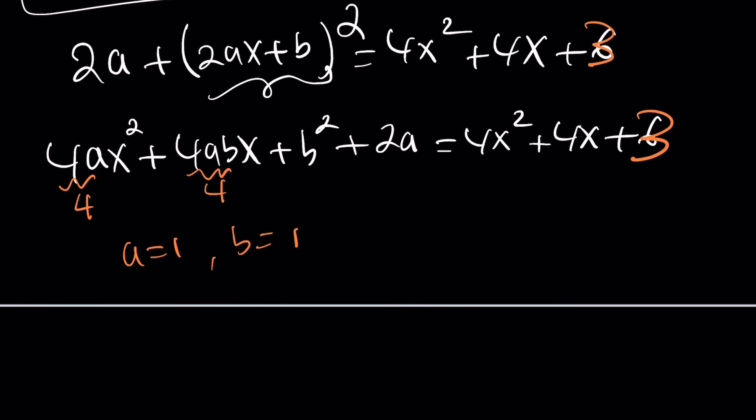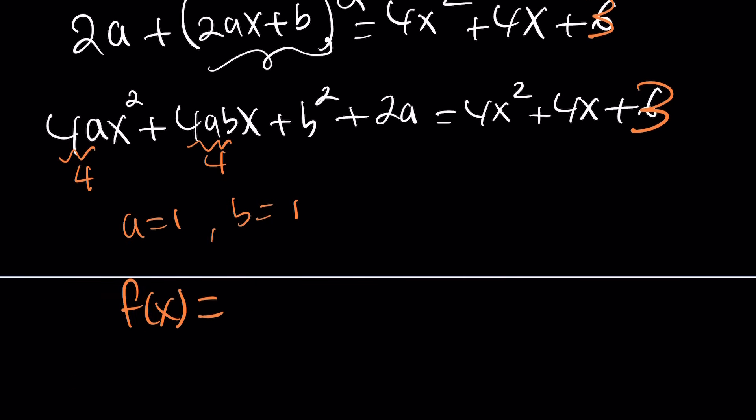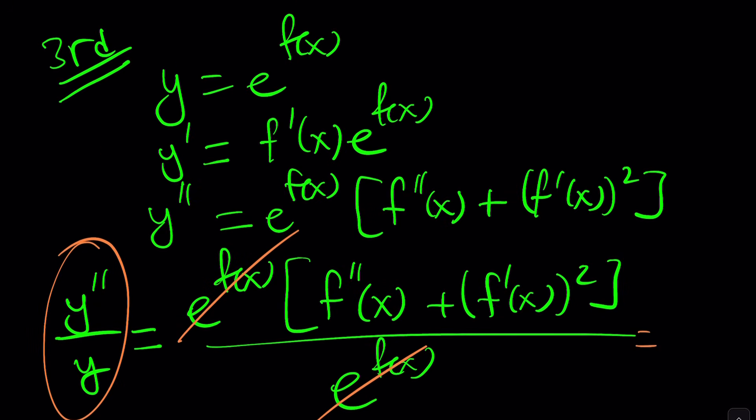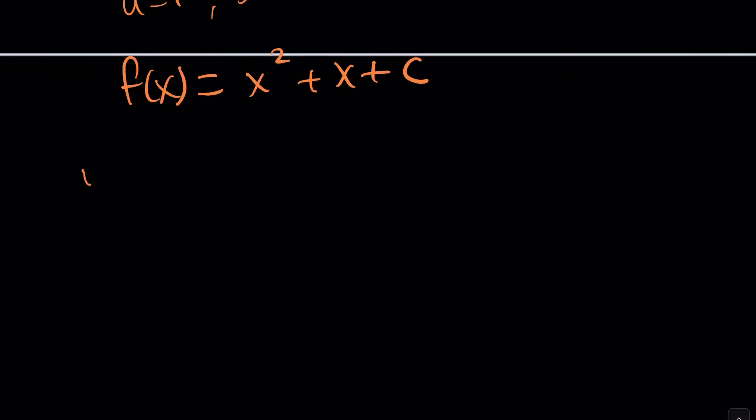So this means that f of x, which we assumed would be written as ax squared plus bx plus c, can be written as x squared plus x plus c. I don't know what c is and I don't think it matters. I could be wrong. We can check it out. But wait a minute. f is not the answer because my equation is supposed to be y equals e to the power f of x. So let's go ahead and do it. y equals e to the power x squared plus x plus c should be a solution for this differential equation. Is that really the case? Let's go ahead and check out our work.